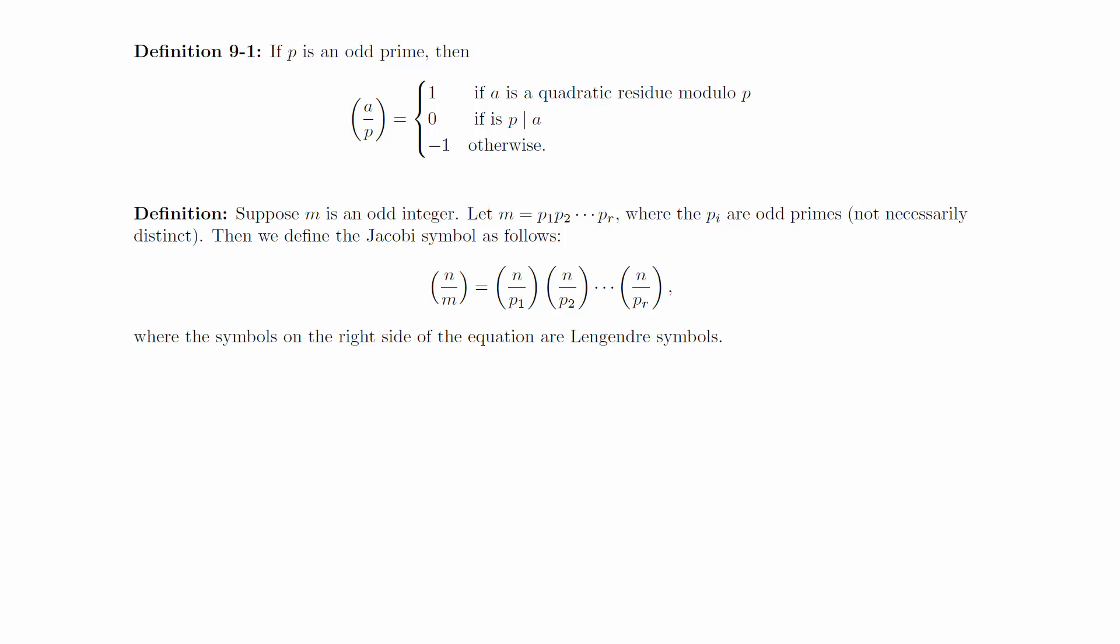Suppose m is an odd integer. Write m as a product of odd primes, not necessarily all distinct, and we can define the Jacobi symbol using this formula. The symbols on the right-hand side of the equal sign are Legendre symbols. We won't do a lot with this right now, but it turns out to have some applications similar to the things we'll be seeing in the upcoming sections.